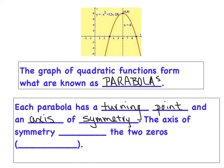That axis of symmetry, like we just said, bisects the two zeros, and just to recap, another word for zeros is the x-intercepts.